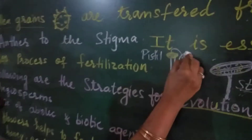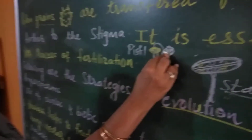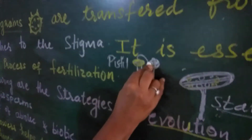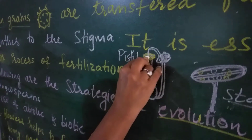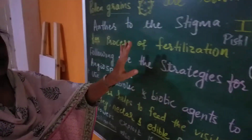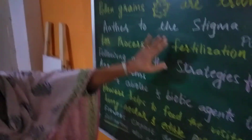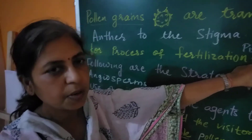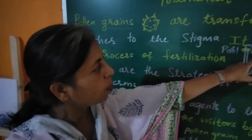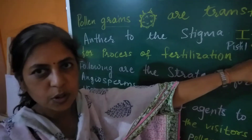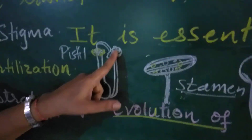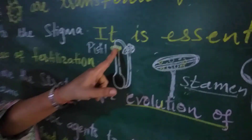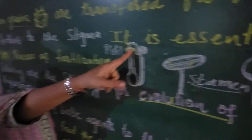In pollination, pollen grains — also called microspores — are transferred from the anther to the stigma.